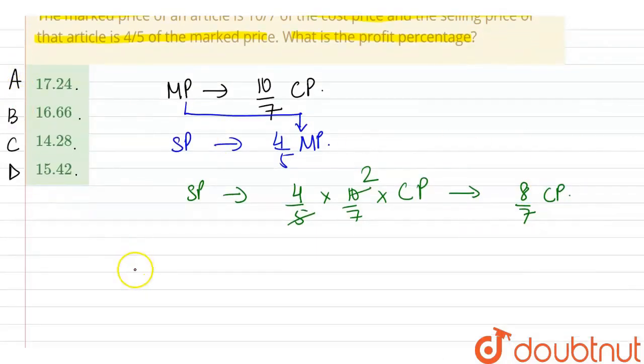Now, hum menei pata hai, profit percentage ka formula kya hota hai? Profit percentage ka formula hota hai: SP minus CP upon CP multiplied by 100, right?